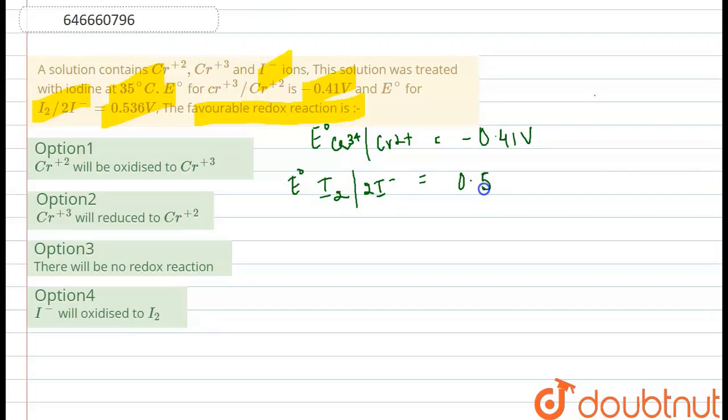We have to find out the favorable reaction here. Iodine, that is I2, will act as oxidizing agent and will get reduced here, and chromium 2 plus will get oxidized to chromium 3 plus. Chromium 2 plus to chromium 3 plus oxidation reaction will be observed here.